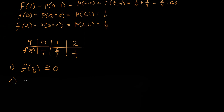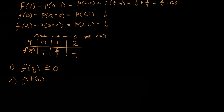Our second rule is that the summation of all the components — f(q_i) with i starting at one and going to n number of possibilities — must sum up to one. Right now we have three possibilities, so n is equal to three.